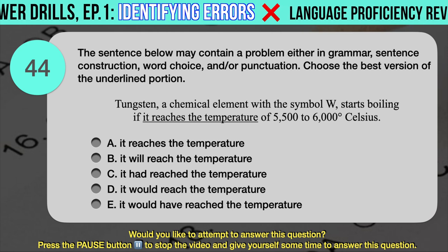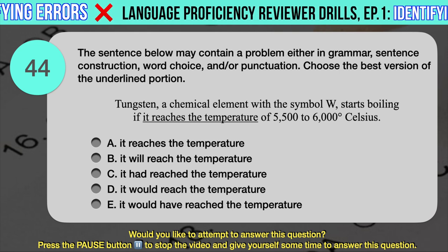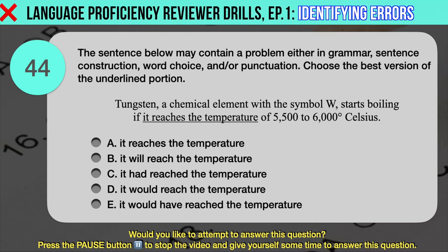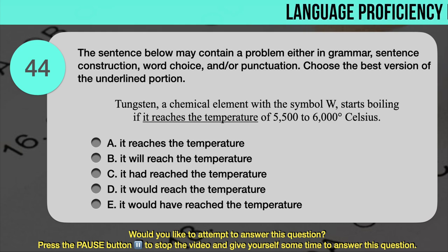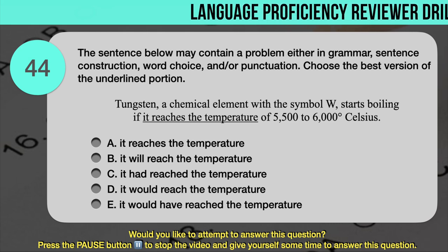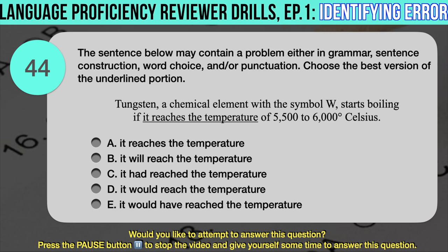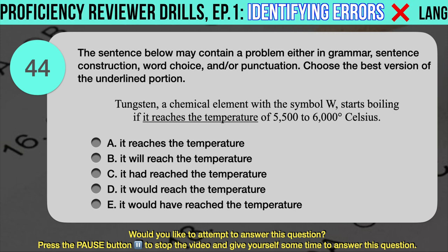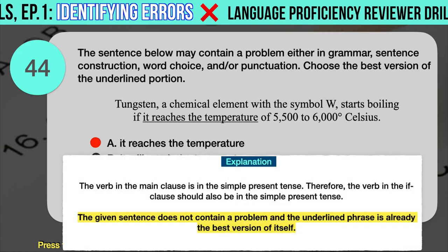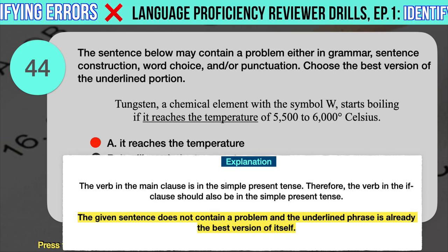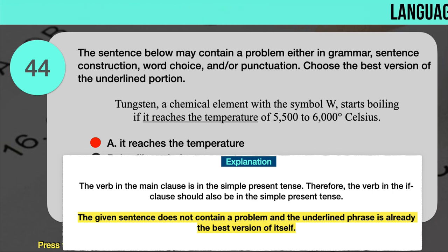Drill question number 44. Choose the best version of the underlined portion. 'Tungsten, a chemical element with the symbol W, starts boiling if it reaches the temperature of 5,500 to 6,000 degrees Celsius.' The underlined portion is 'if it reaches the temperature.' Answer choices: A. Reaches the temperature. B. It will reach the temperature. C. It had reached the temperature. D. It would reach the temperature. E. Would have reached the temperature. The correct answer is A. Since the verb in the main clause is in the simple present tense ('starts'), the verb in the if-clause should also be in the simple present tense. The given sentence does not contain a problem and the underlined phrase is already the best version of itself.